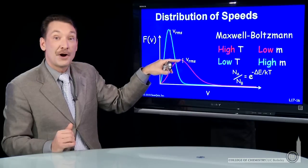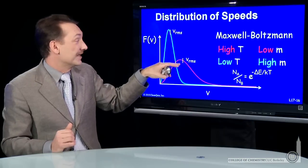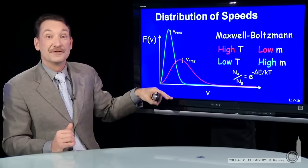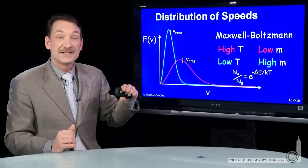That would be the greatest number of particles have this velocity, the peak of these two curves. The root mean squared velocity falls here.